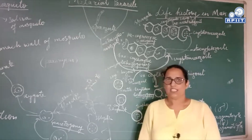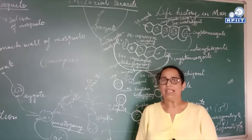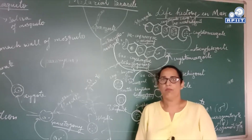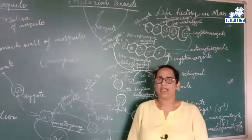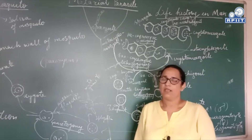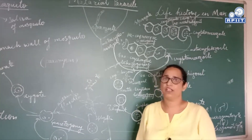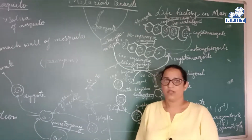Today I am here again with a new video on the life cycle of Plasmodium protozoa. We will discuss about malaria. Malaria is a mosquito-borne disease caused by a protozoa belonging to the species Plasmodium. There are many species of Plasmodium like Plasmodium ovale, Plasmodium vivax, Plasmodium falciparum, Plasmodium malariae, and Plasmodium knowlesi.